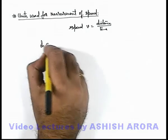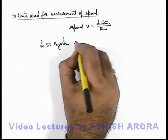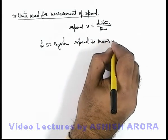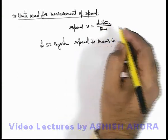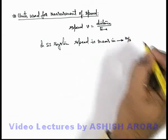So here, in S.I. system, speed is measured. The units of distance we can measure in meter and time is measured in second, so speed is measured in units of meters per second.